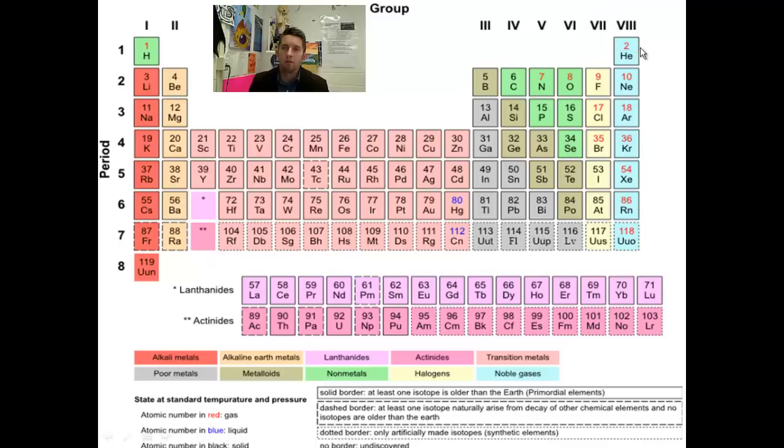Right here, this final family on the right have eight valence electrons, a full valence shell if you will.